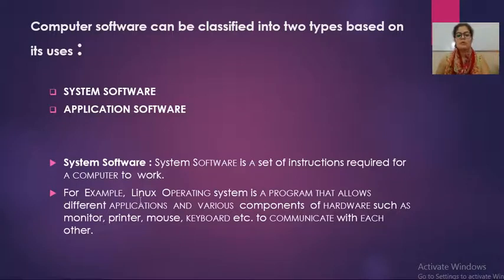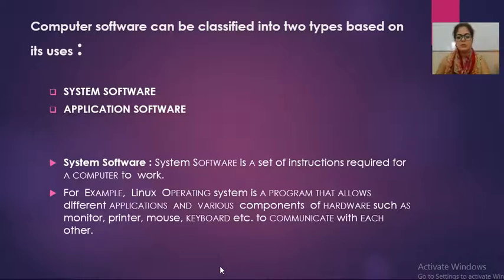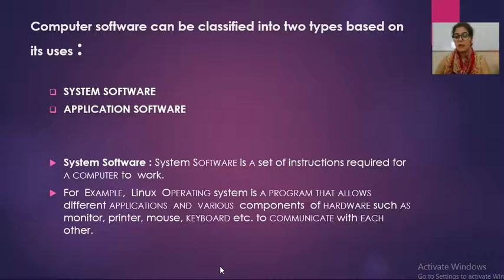Examples of system software include Linux operating system or Windows operating system. Linux operating system is a program that allows different applications and various components of the hardware such as monitor, printer, keyboard, and mouse to communicate with each other. When we use a PC or computer, we require different devices like keyboard, mouse, monitor, and printer. The very basic need is we must have an operating system. Once we have the operating system, we can attach all these devices, install drivers, and then operate the device.